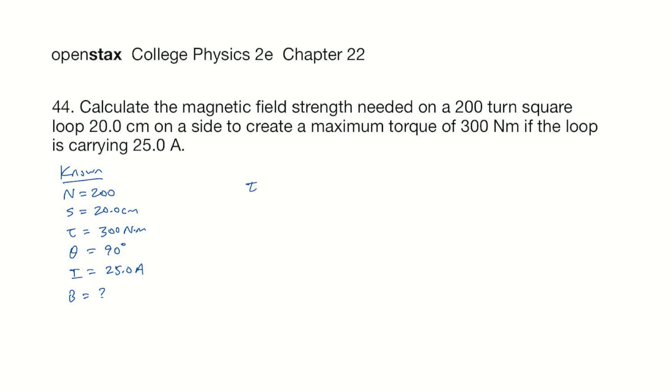Torque is the number of turns times the current times the area of the loop times the magnetic field times the sine of theta. Theta is the angle between the magnetic field and the perpendicular to the plane of the area. And so to make torque maximum, that angle needs to be 90 degrees, because sine of 90 is 1.